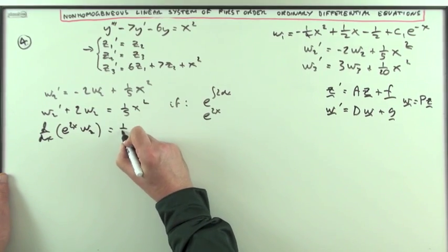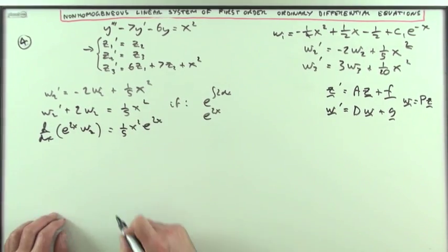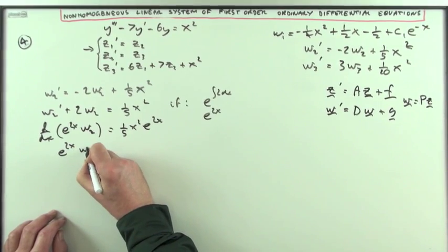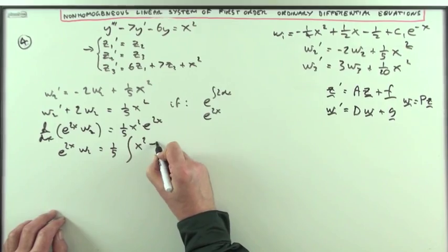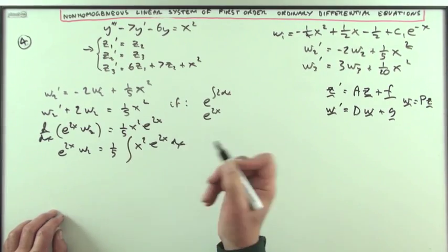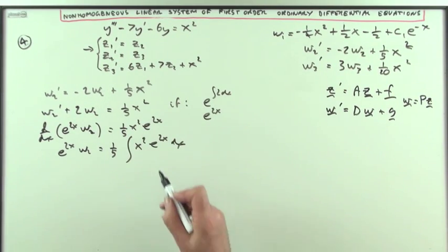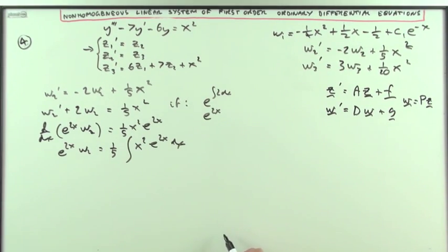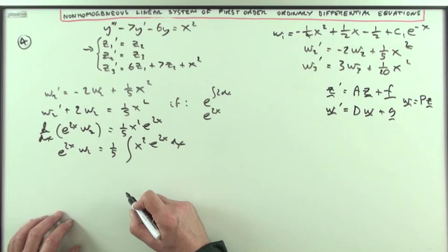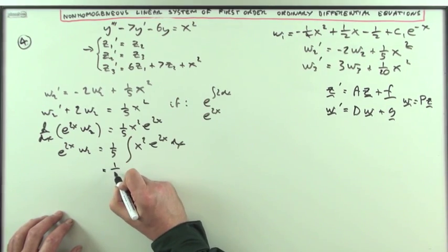So that'll be the same as one fifth of x squared e to the 2x. So e to the 2x w2 will be one fifth of the integral of x squared e to the 2x dx. And that's just the same as before apart from these 2s when you integrate this term there'll be lots of dividing by 2. So you have to be careful with your coefficients here. I'll go through it anyway very quickly.